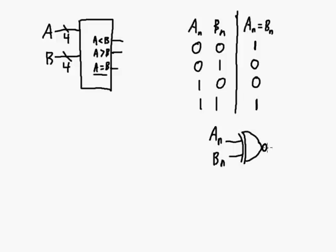Hopefully you recognize that this simple two-bit truth table describes the XNOR gate - where the output An equals Bn is one when both inputs match.